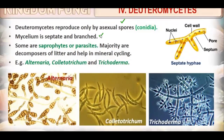The mycelium of Deuteromycetes is septate and branched. They are saprophytes or parasites, and the majority are decomposers of litter, helping in mineral cycling. Examples include Alternaria, Colletotrichum, and Trichoderma.